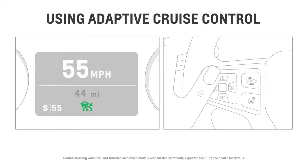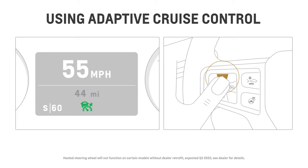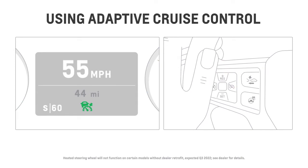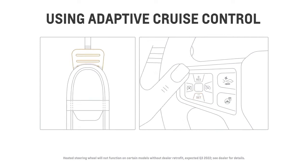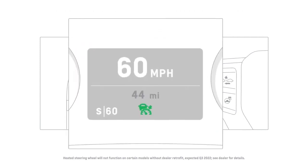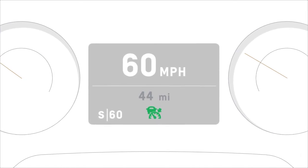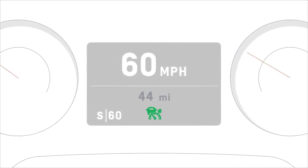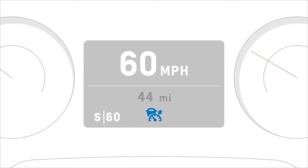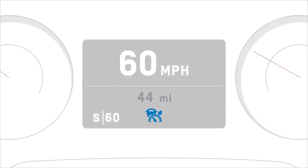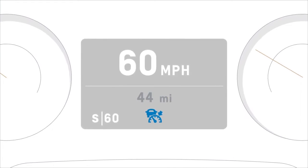If you'd like to increase your speed, tap the Resume or Plus button when engaged, or use the accelerator pedal to reach a different speed, then press the Set or Minus button. Keep in mind that when you use the accelerator pedal while Adaptive Cruise Control is active, the green icon will change to blue, which means that Adaptive Cruise Control Automatic Braking is temporarily disabled until you release the accelerator pedal.